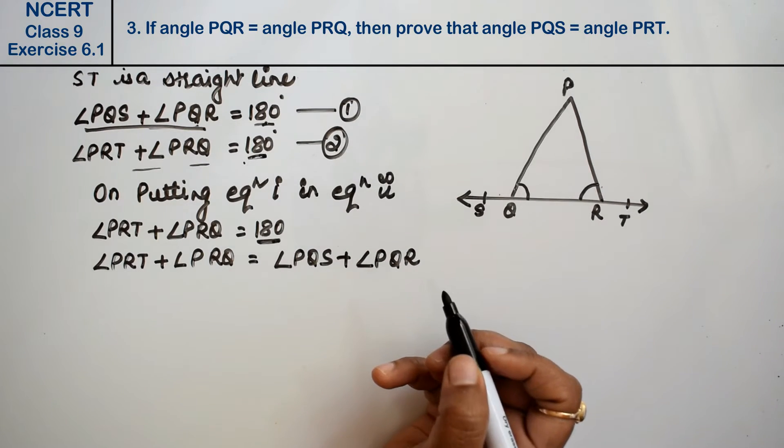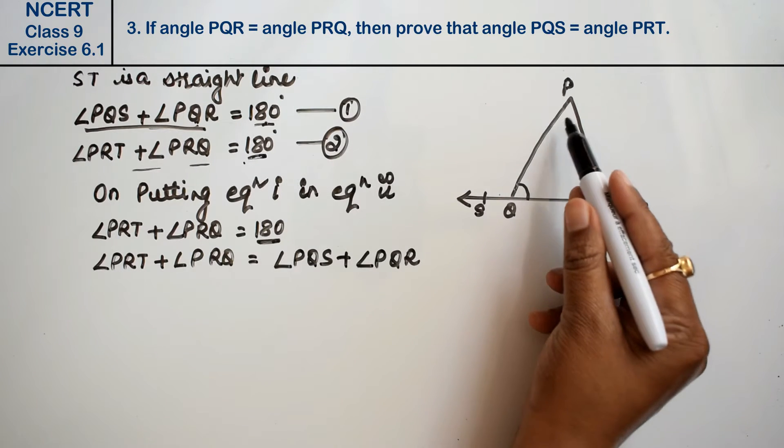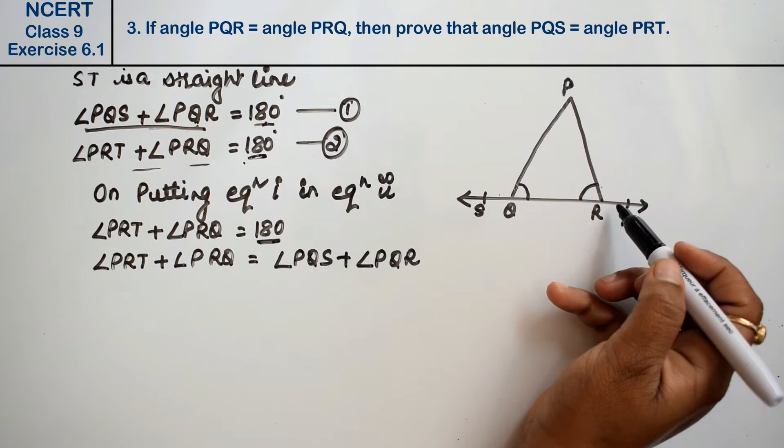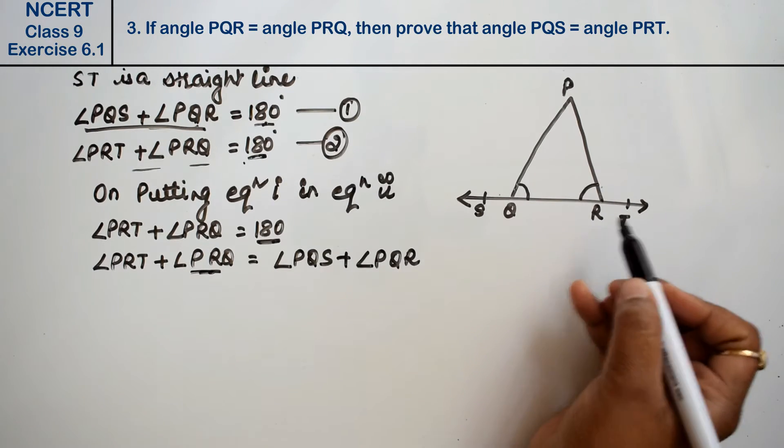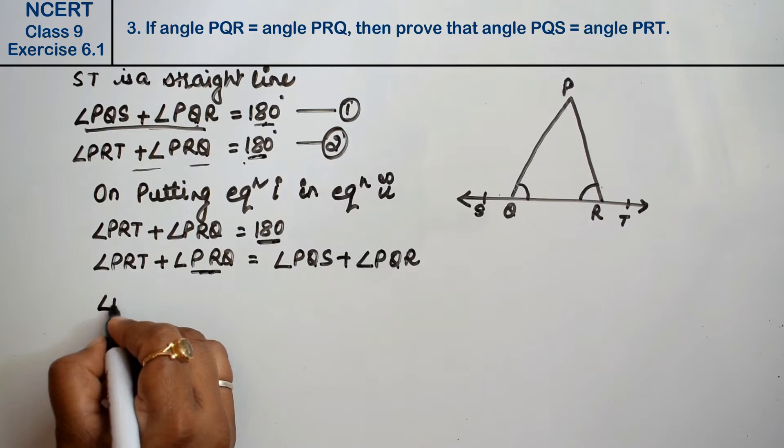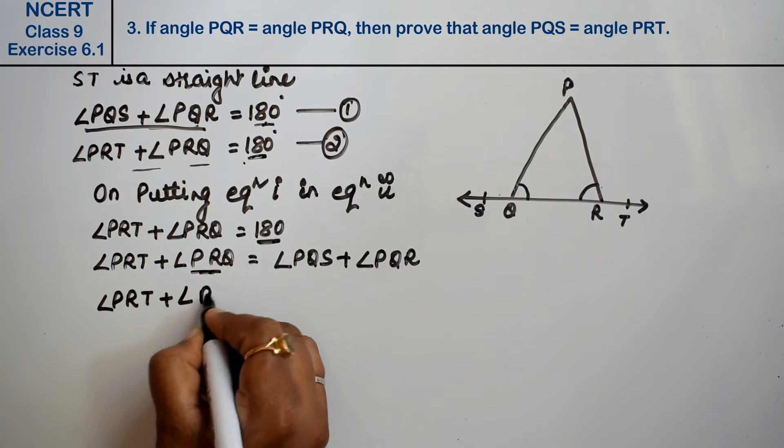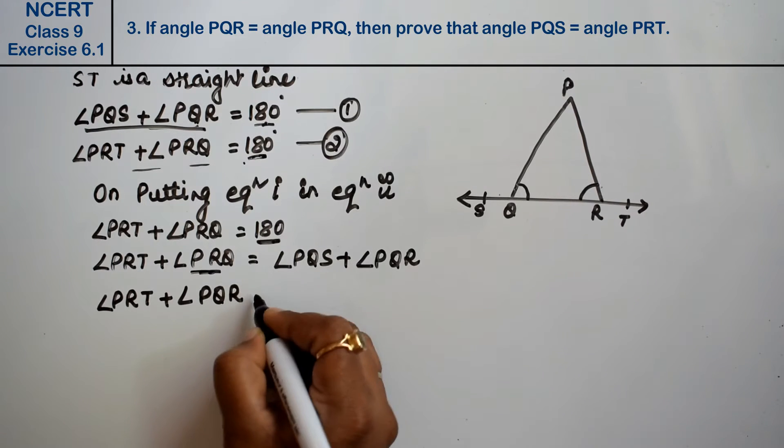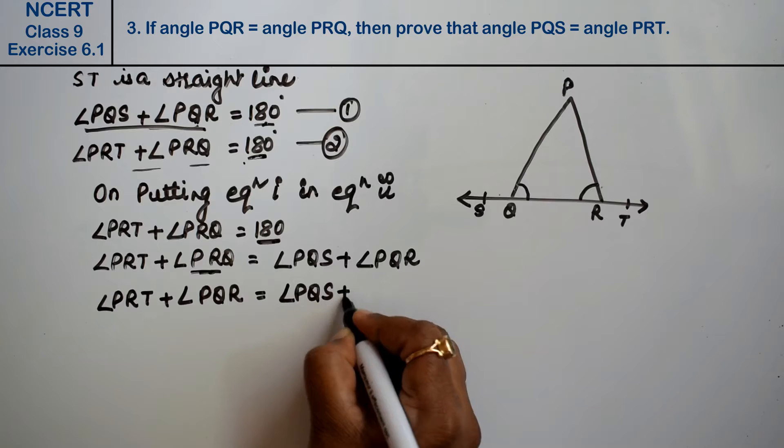Now, what was given? Angle PQR equals angle PRQ. So I can write angle PRT plus angle PQR equals angle PQS plus angle PQR.